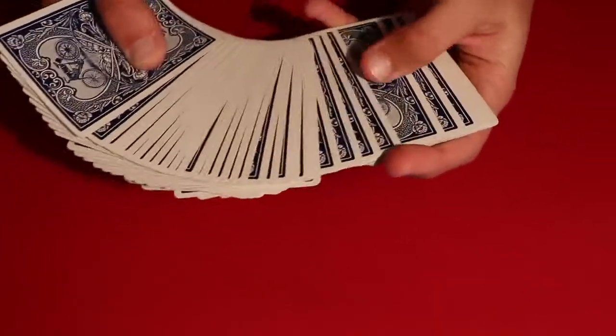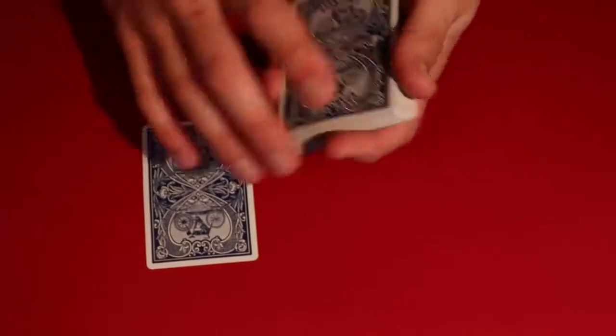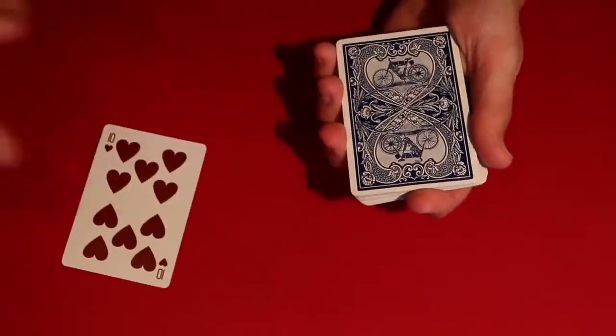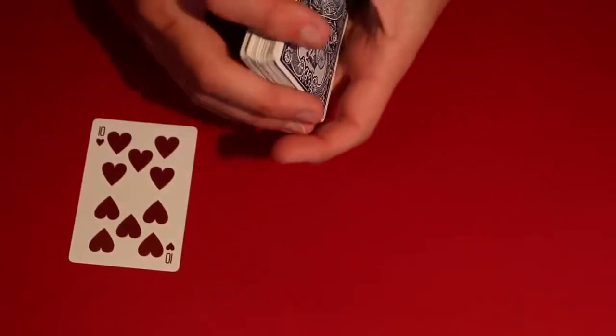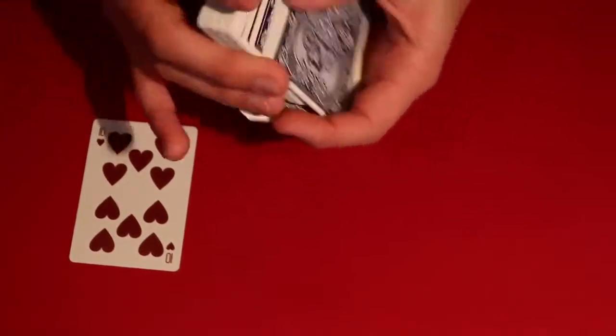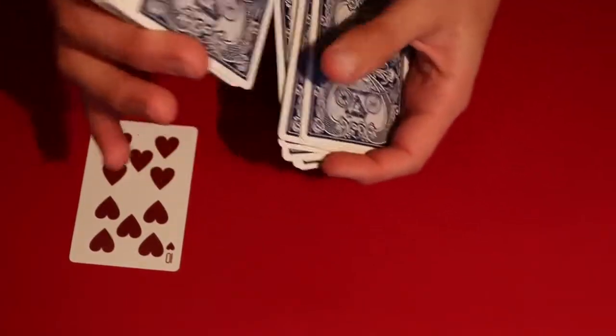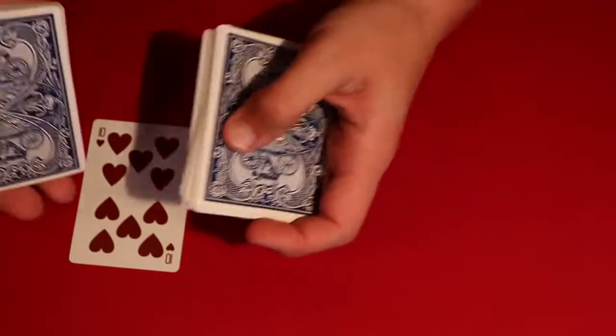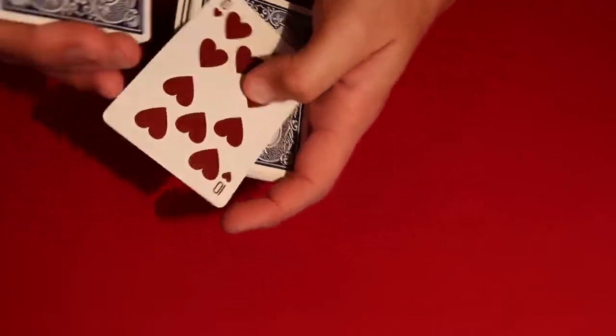So you go ahead and you have the spectator pick any card that they want to. And let's say in this case it's a ten of hearts. So you go ahead and what you do is tell your spectator to tell you when to stop and all you're doing is a regular overhand shuffle. And the moment they tell you to stop, I'll leave the card right here.